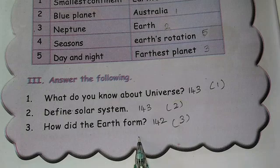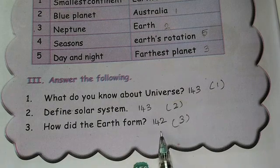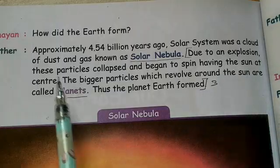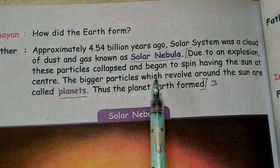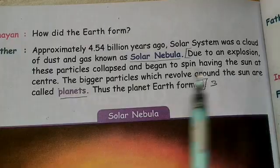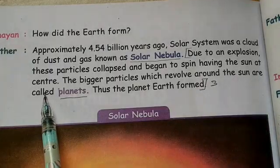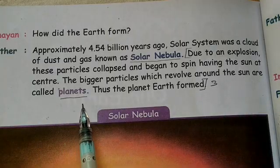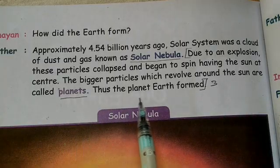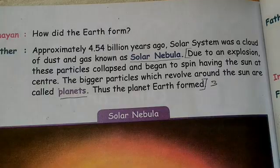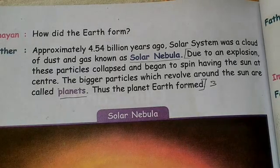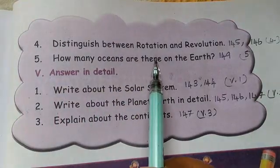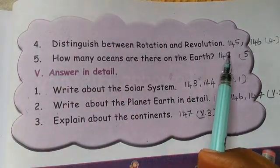Next question: how did the Earth form? Page 142. Due to an explosion, these particles collapsed and began to spin, having the Sun at the center. The bigger particles which revolve around the Sun are called planets. That is how the planet Earth formed.